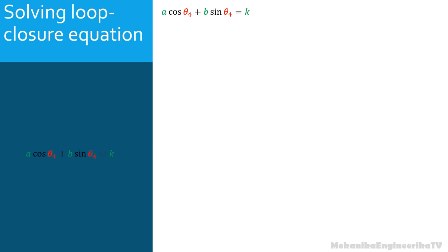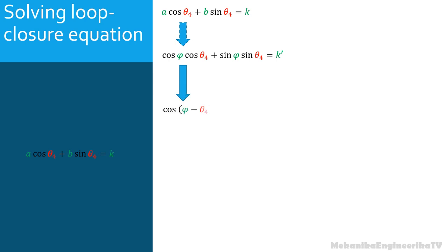There are a few procedures to solve this equation. Here we are going to transform the equation into the form: cos φ·cos θ4 + sin φ·sin θ4 = K'. If we succeed in writing the equation in this form, then it will be easy to write it as cos(φ − θ4) = K'.